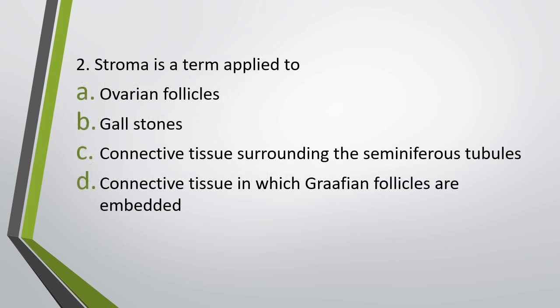Question number two. Stroma is a term applied to: ovarian follicle, gallstones, connective tissue surrounding the seminiferous tubule, or connective tissue in which the Graafian follicles are embedded. Correct answer is option D — connective tissue in which the Graafian follicles are embedded.